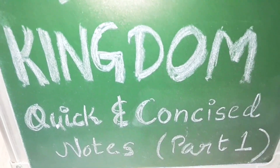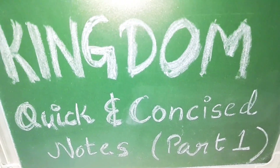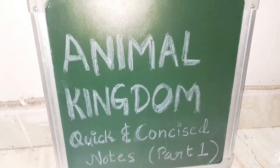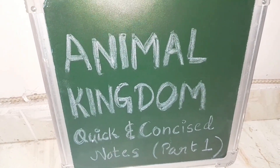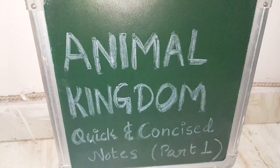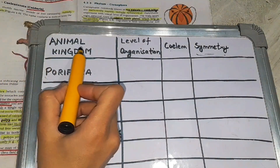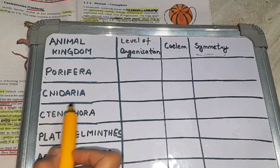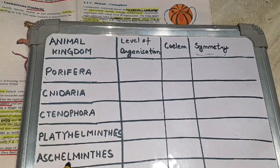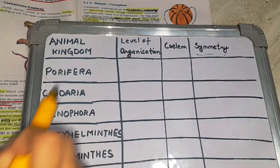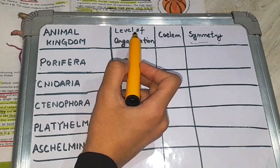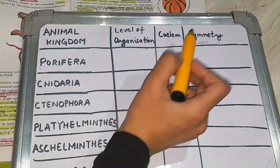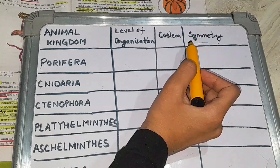Hello everyone, welcome back to another video of quick and concise notes. Today's topic is animal kingdom. We will discuss and make a tabular form of the various phylums of the animal kingdom like Porifera, Cnidaria, Ctenophora, Platyhelminthes, Aschelminthes, and others, and we will differentiate them on the basis of level of organization, coelom, and symmetry.